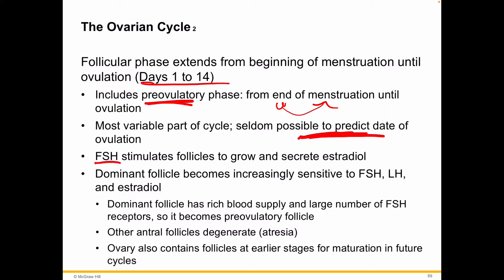Follicle-stimulating hormone is going to stimulate some follicles to grow, secrete, and then mature on to become new oocytes. The dominant follicle will become increasingly sensitive to follicle-stimulating hormone, luteinizing hormone, as well as estradiol. The main follicle in charge will have a rich blood supply and a large number of FSH receptors, so it becomes very highly stimulated.